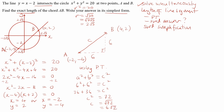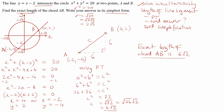Simplifying: root 72 equals root 36 times root 2, and root 36 gives 6, so c equals 6 root 2. That's the answer in its simplest form. The exact length of chord AB is 6 root 2.